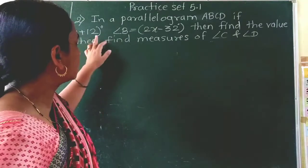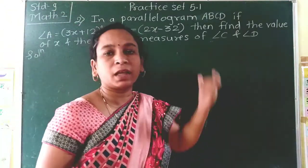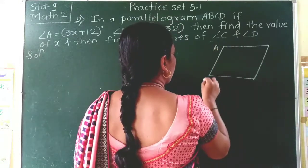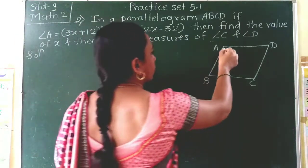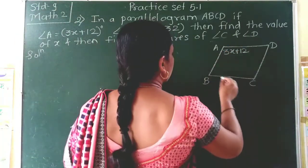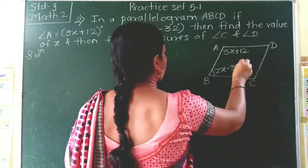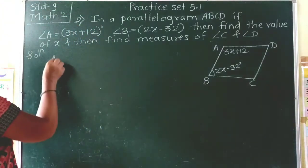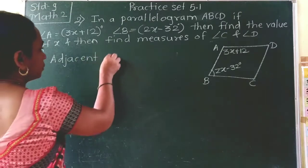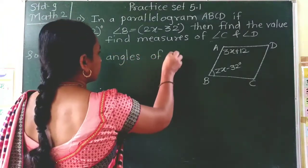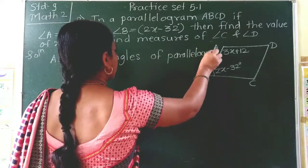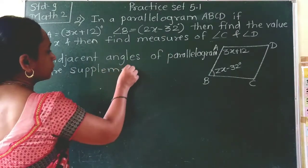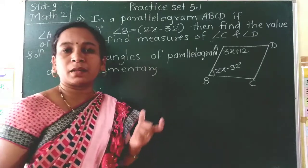Second example: in a parallelogram, two angles are given — angle A and angle B — and we have to find angle C and angle D. Angle A is 3x plus 12 and angle B is given as 2x minus 32. In the information, they gave adjacent angles. Adjacent angles of a parallelogram are supplementary. What do you mean by supplementary? Their sum is 180 degrees.